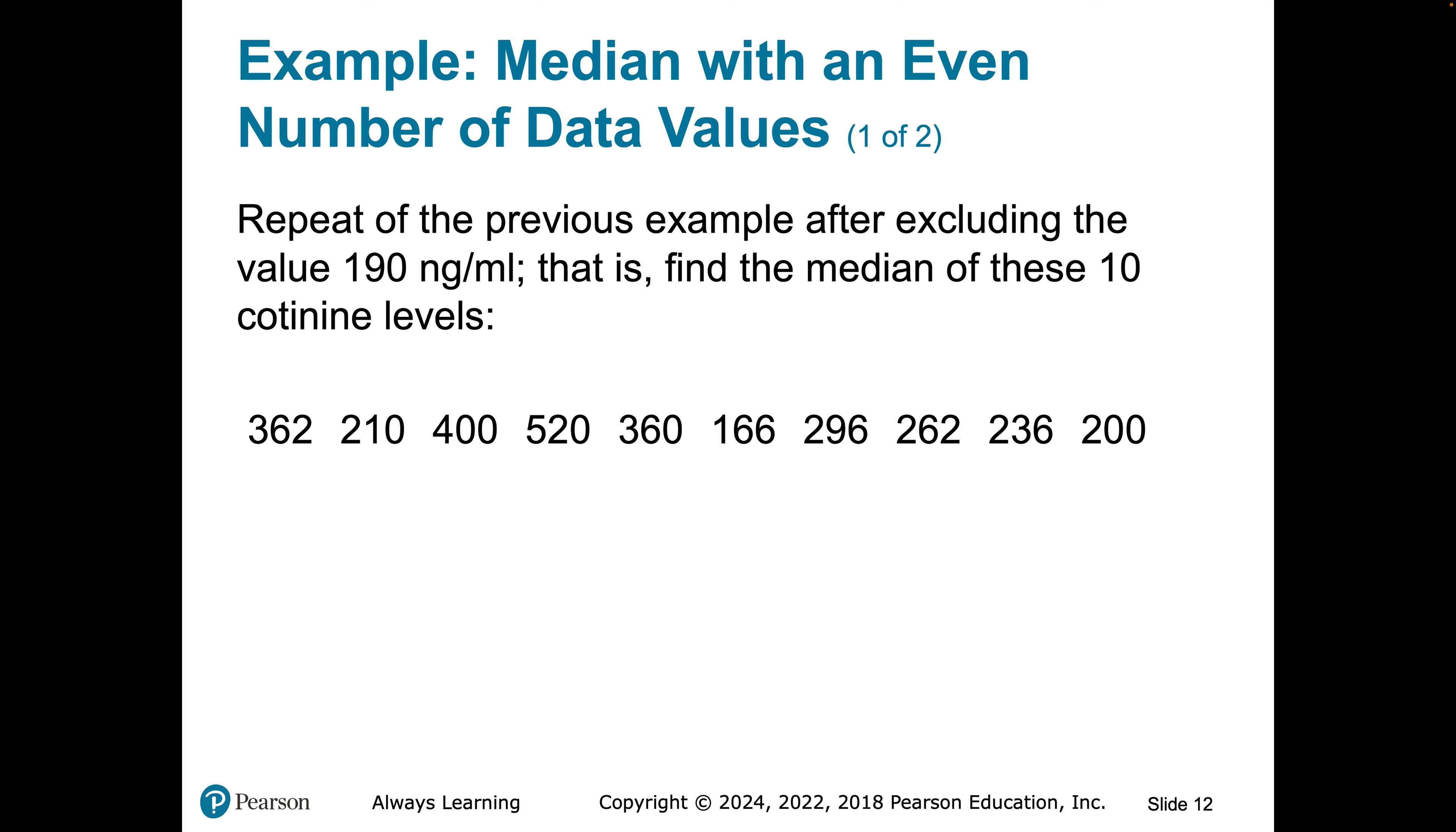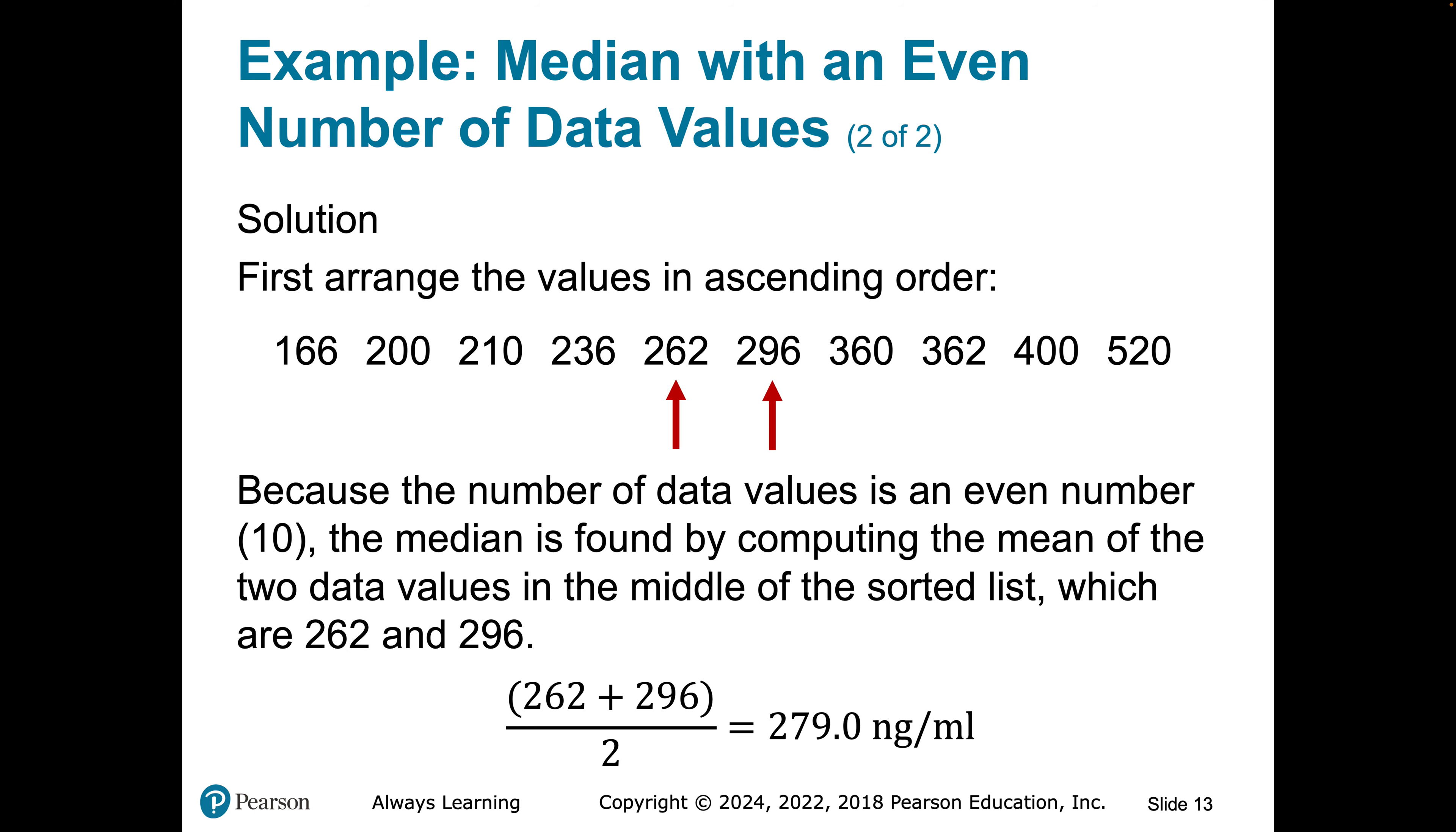Now, when we have even number, it's a little bit different. We don't have a number smack dab in the center. We have two numbers in the center. So what we do is we take those two numbers, we average those, and we get the median here by taking 262 plus 296 divided by 2 is 279. Now, you might say, Dr. Darbo, you're going through this very quickly. It's been a while since I've had statistics.